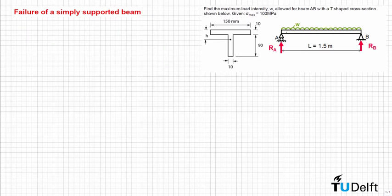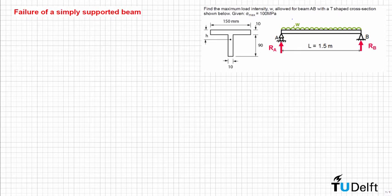In this problem, we consider beam AB, which is being supported at A and B. We have a distributed load with load intensity equal to W. We need to find the maximum load intensity W allowed for this beam, knowing that the maximum normal stress is equal to 100 MPa. We also know the shape of the cross-section — in this case it's a T-shaped cross-section.